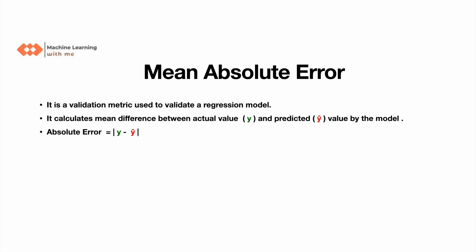It calculates the difference between the actual value and the predicted value. Here, the green dot indicates the actual value and the red dot on the regression line indicates the predicted value. The absolute difference between these both is the absolute error.